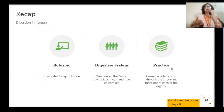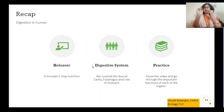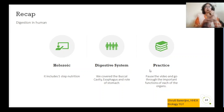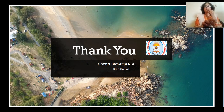In stomach, the food has been partially digested — complete digestion has not yet occurred. So let's recap: human beings follow holozoic mode of nutrition, which includes five steps. To assist this, we have a digestive system. We studied three major organs: the oral cavity, where buccal cavity and salivary amylase partially digest complex sugars into simpler sugars; the esophagus; and the stomach, where HCl and pepsin act on the food, protected by a mucus layer. I suggest you pause the video and review these organs and their functions. For further organs, we'll continue in the next video. Thank you for your patient listening — see you in the next video, and don't forget to stay safe.